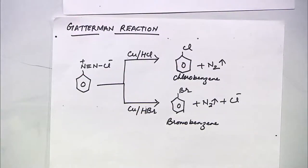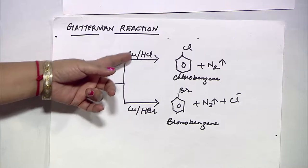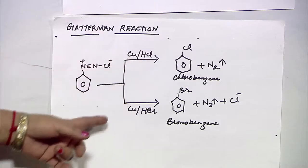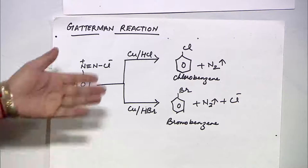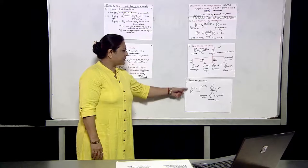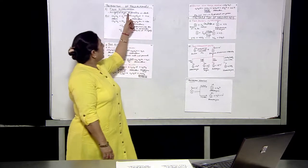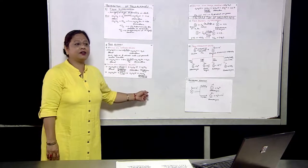Chlorobenzene or bromobenzene can also be prepared by the Gattermann reaction, using copper metal. Benzene diazonium chloride reacted with copper metal and HCl gives chlorobenzene and nitrogen. Reacting with copper metal and HBr gives bromobenzene, nitrogen, and Cl−. These are the various reactions used to prepare haloalkanes and haloarenes.